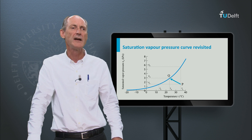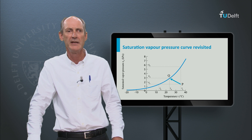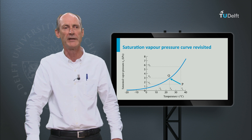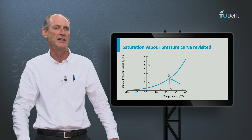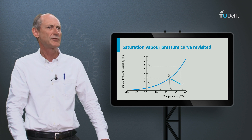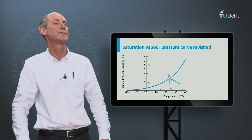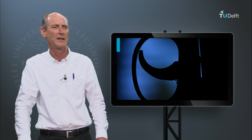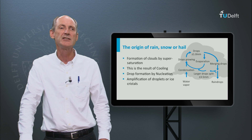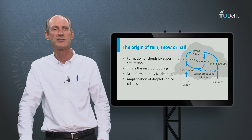Dew and white frost find their origin in the near-ground humidity of the air. It is formed when the Earth's surface cools until the dew point, just like we saw in the saturation-vapour pressure curve in the previous section. But rainfall, snow and hail, as everybody knows, falls from the clouds. How is this process triggered? As in the case of dew, droplet formation is governed by the saturation-pressure curve.